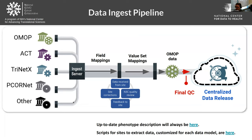The pipeline for our data ingest: sites can send N3C data from a number of different common data models, including ACT and OMOP, which have been mentioned previously. Through quality control efforts, we have a virtuous cycle where we receive data from the sites and do quality reviews.